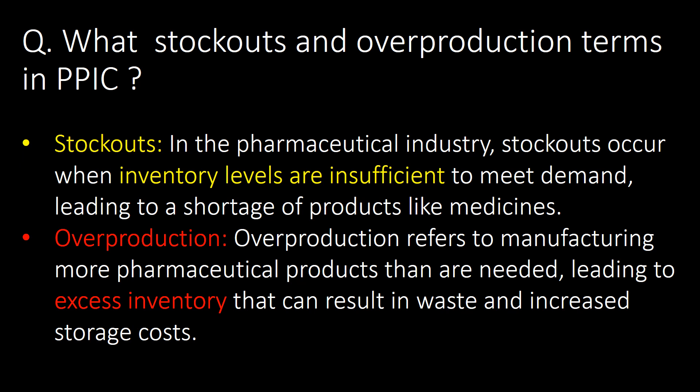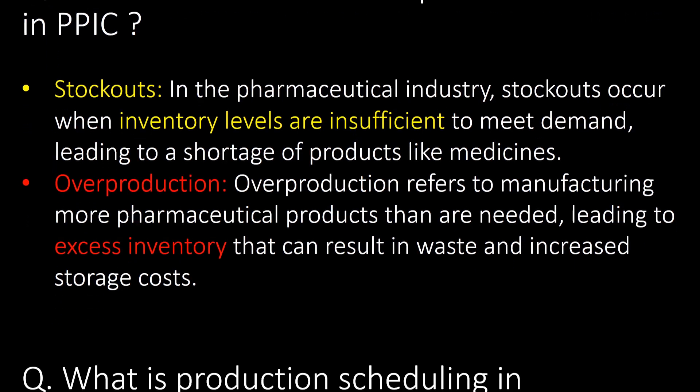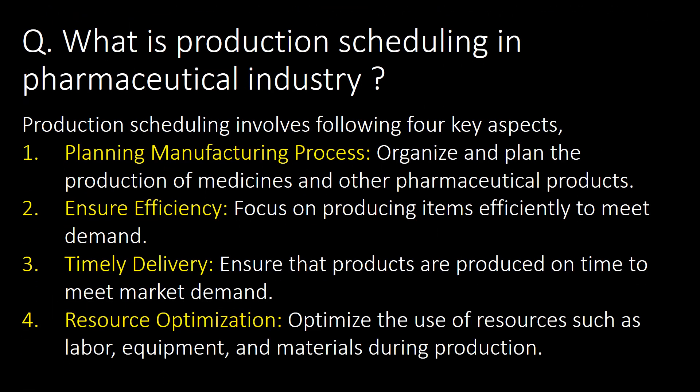Stockouts and overproduction are very commonly used terms in the pharmaceutical industry. Stockouts occur when inventory levels are insufficient to meet demand, leading to a shortage of products like medicines. Overproduction refers to manufacturing more pharmaceutical products than are needed, leading to excess inventory that can result in waste or increased storage costs.